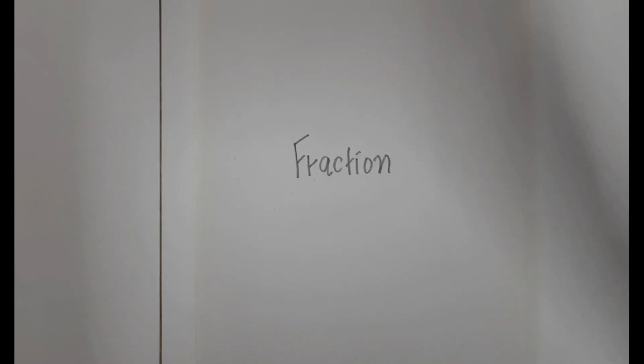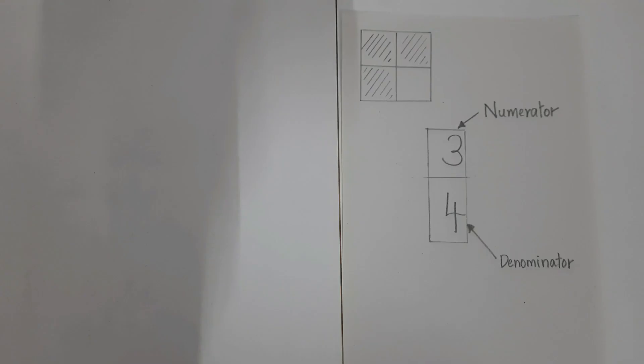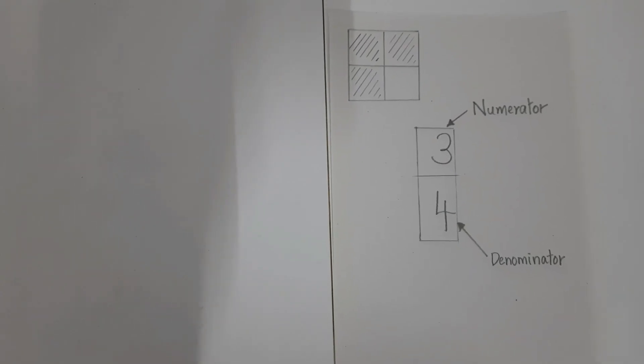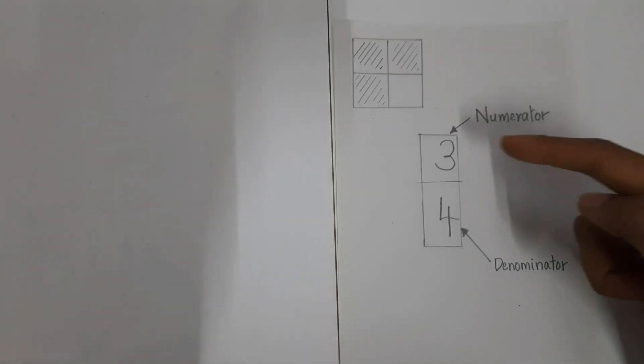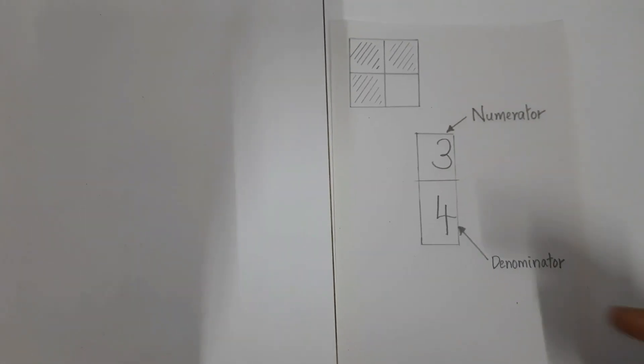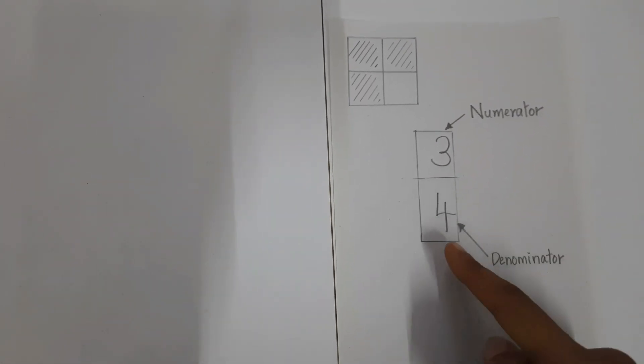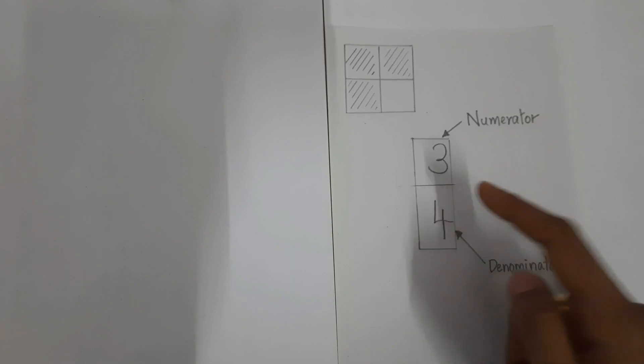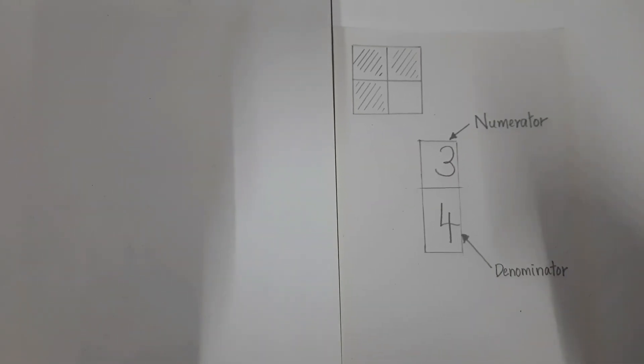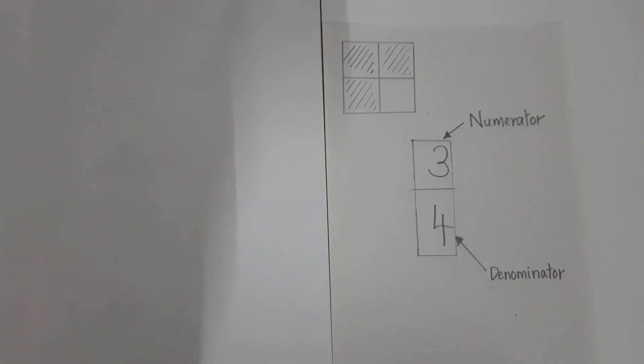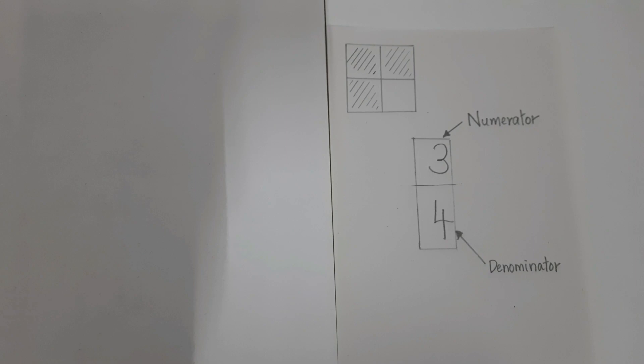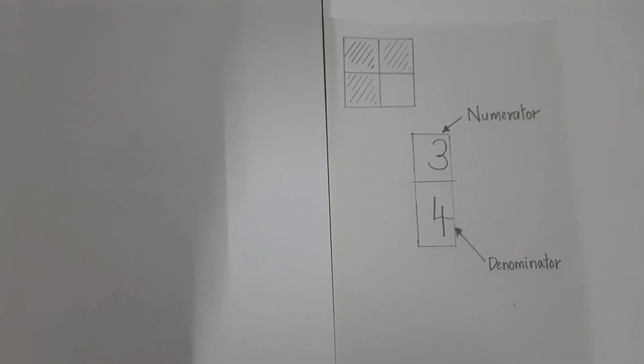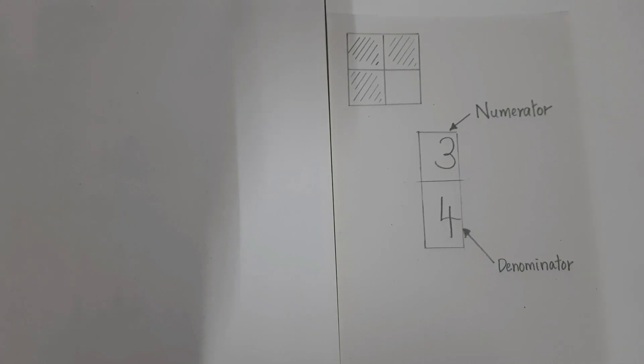A fraction is a mathematical representation of a part of a whole. It consists of a numerator—the number on top—and a denominator—the number on the bottom—separated by a horizontal line. The numerator represents the part you have, and the denominator represents the total number of equal parts in the whole.